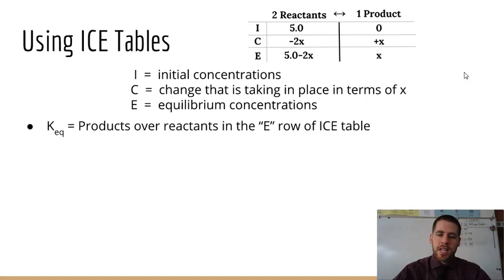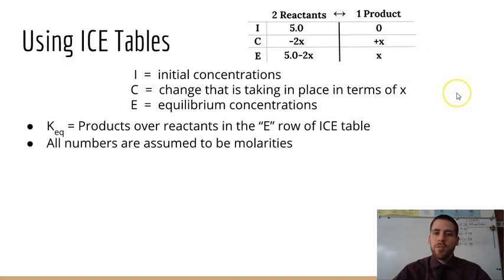All right, here's a few side notes to add to this. The K_eq is going to be equal to our products over reactants, like always, and that's at equilibrium. And so that's what the E row represents, right? So you can often set your K value that you're either given, or if we're trying to find our K value, then we set it equal to our equilibrium concentrations. All numbers are assumed to be molarities. They're all concentrations.